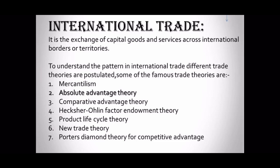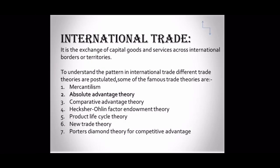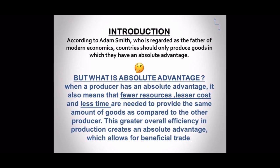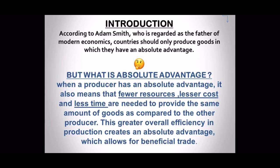Mercantilism was a zero-sum game with very restrictive trade under which no one could really gain, so it is not prioritized much. The first highlighted theory to discuss is the absolute advantage theory. The absolute advantage theory was published by Adam Smith in his famous book 'Wealth of Nations' in 1776. According to Adam Smith, who is regarded as the father of modern economics, countries should only produce goods in which they have an absolute advantage. But what is absolute advantage?